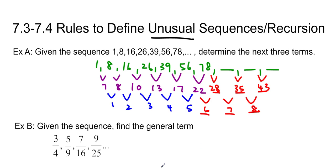And now I can find the actual answer. So 78 plus 28 gives us 106. 106 plus 35, 141. And 141 plus 43 gives us 184. And there we have our answers.